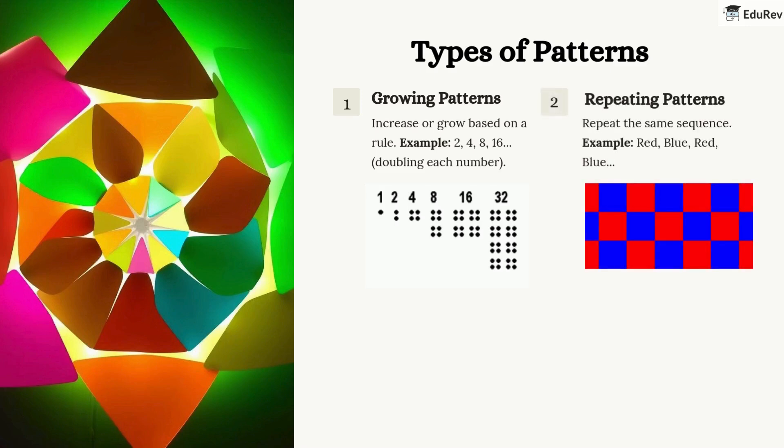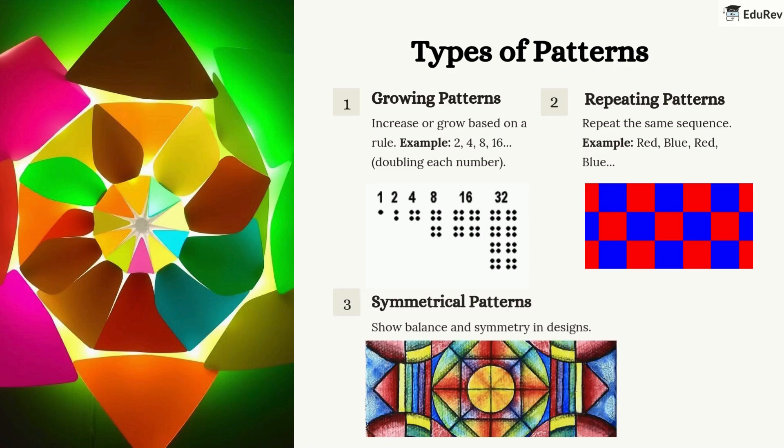Next is a repeating pattern. This means the same sequence is repeated. For example, red, blue, red, blue - it just keeps repeating. And finally, there are symmetrical patterns. These are patterns that are balanced and look the same on both sides.